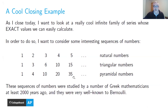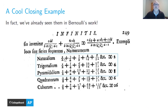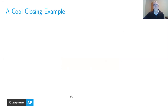We've already seen these sequences in Bernoulli's work. Looking at the numerators of the first three sums in his table: 1, 2, 3, 4, 5 are the natural numbers; 1, 3, 6, 10, 15 are the triangular numbers; 1, 4, 10, 20, 35 are the pyramidal numbers. Bernoulli has labeled them on the left-hand side in Latin. The question is: how does Bernoulli find these sums, and more importantly, is there a pattern?